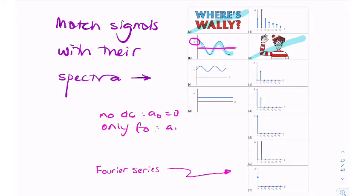So a1, or if we call it c1, should be a over 2 because that's that amplitude there.